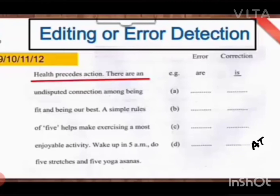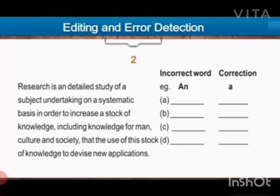Do five stretches and five yoga asanas. So this is the correction, and this is the way how to find the error in the sentences and make it correct. Research is an detailed study — 'an' should not be used because 'detailed' starts with D, which is a consonant. So in that case, we will use 'a.' Research is a detailed study. That is an article mistake.